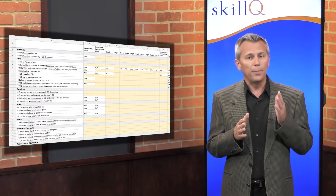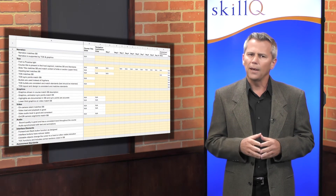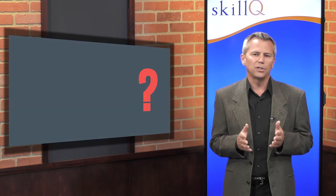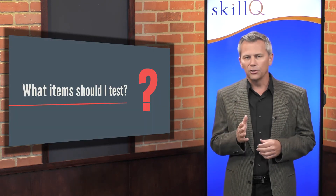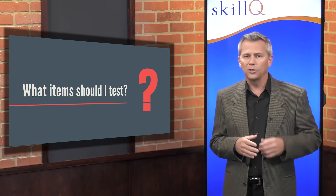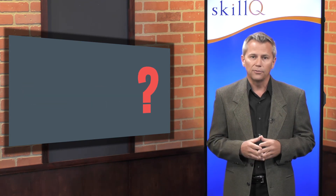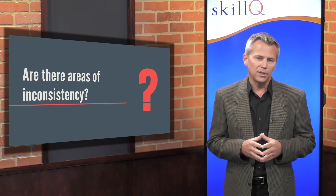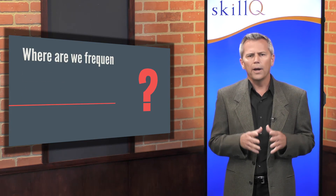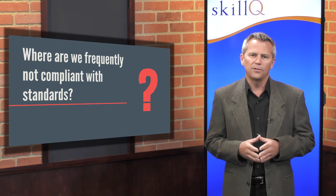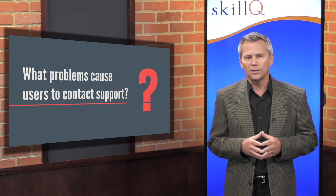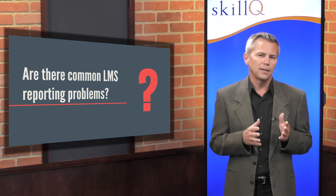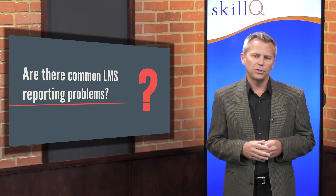Now that you understand the basic structure of the test script, let's talk about how you determine categories and specific test items. A common question is: what items should I test? To answer this question, lean on your experience with previous projects. Ask yourself: what problems show up again and again during reviews? Are there areas of inconsistency in your projects? Where are we frequently not compliant with company standards? What problems cause users to contact support? Are there common LMS reporting problems that result from content published settings?